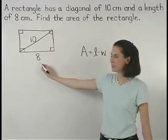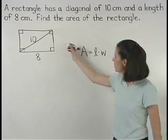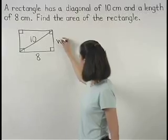And we're given that the length of the rectangle is 8 centimeters, but we don't know the width, which we can label in our diagram as W.